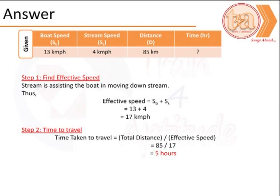We begin with realizing that the boat is assisted by the stream, and therefore the effective speed is the speed of the boat plus the speed of the stream. That is 17 km per hour.